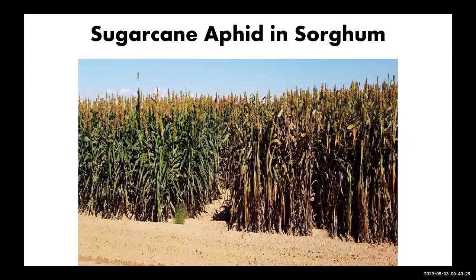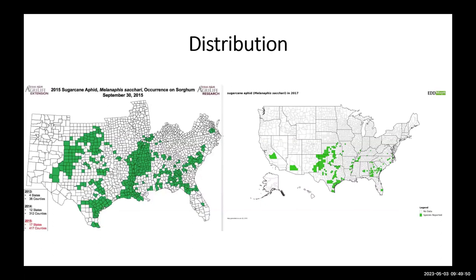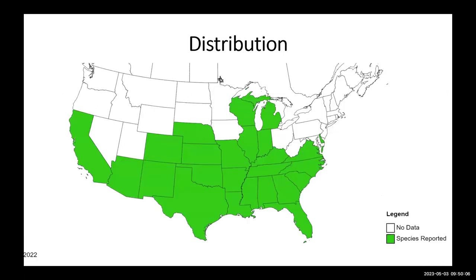Now we'll switch to an insect we are about to deal with — hopefully not at as high pressure — the sugarcane aphid. It came way back, starting in the southeast around 2013, and by 2015 was in many areas from Florida all the way to New Mexico. By 2016 it came to our state and stayed. The distribution has spread widely in just a very few years.